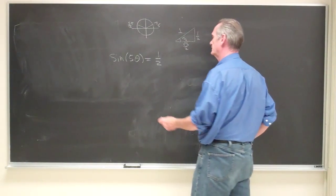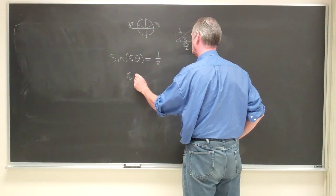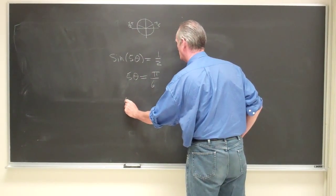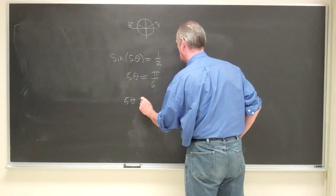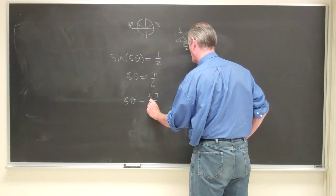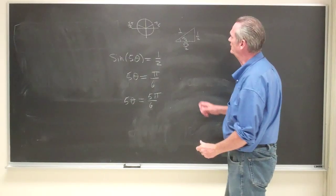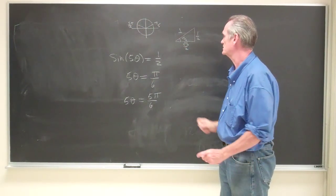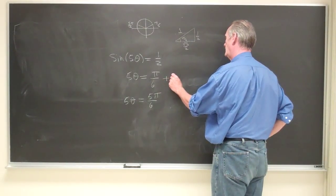So you start writing 5 theta is equal to pi over 6, and then you can also write 5 theta is equal to 5 pi over 6. But the sine function is periodic, and it's periodic with 2 pi, so I need to add in 2 pi here.